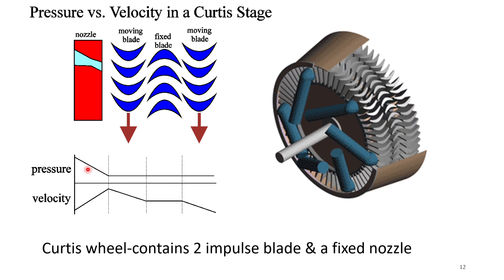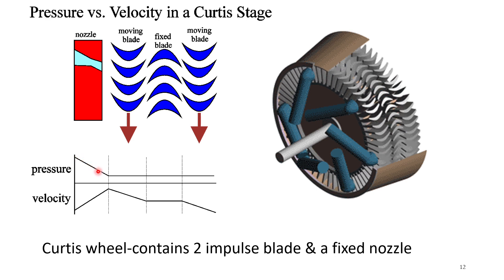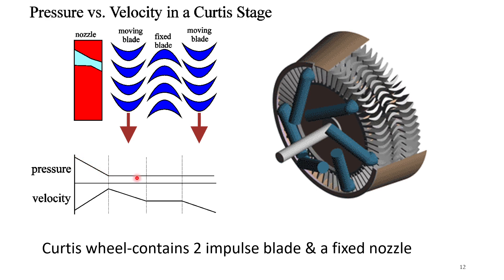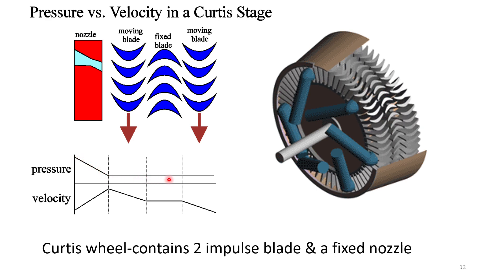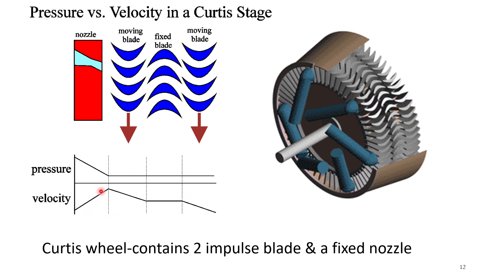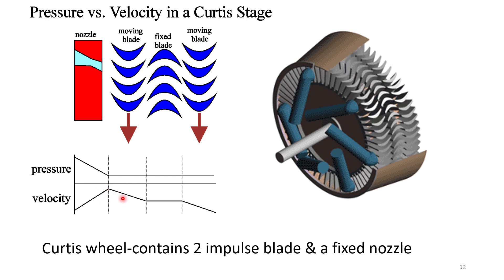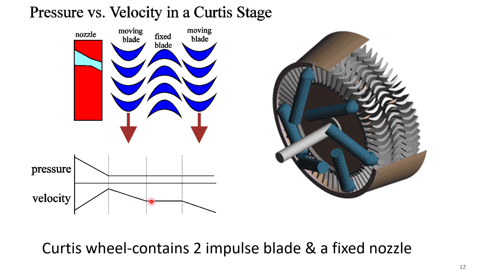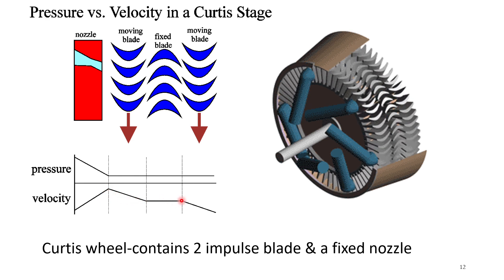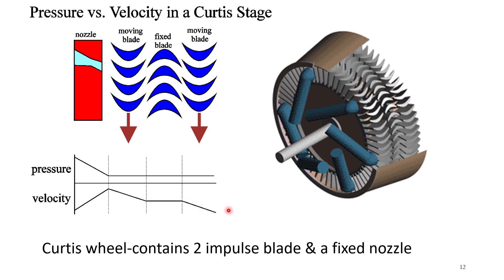In the Curtis wheel, pressure drops only in the first nozzle and remains constant in the second nozzle and both moving blades. Velocity increases in the first nozzle, reduces in the first moving blade, remains constant in the second nozzle, and reduces again in the next moving blade.